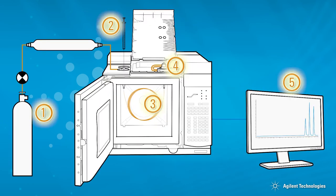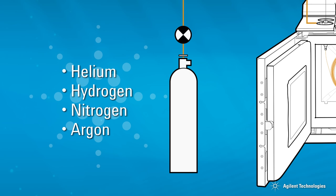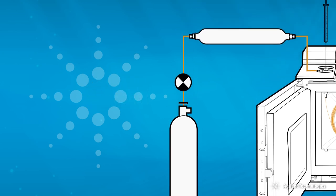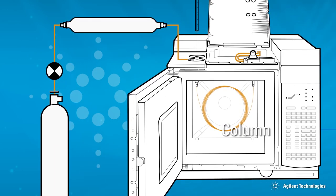There are five primary components to a GC system. Carrier gas from a pressurized cylinder or a gas generator. Typical carrier gases are helium, hydrogen with safety precautions, and nitrogen or argon. The gas must be very pure, greater than 99.9995%. The carrier gas carries the sample through a GC column, where it is separated into individual components of the sample mixture.